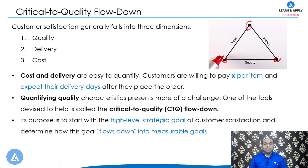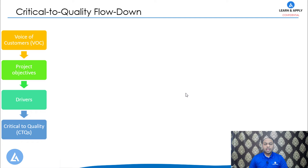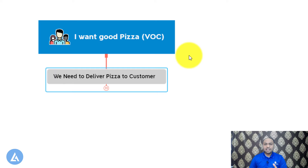Let's understand this concept with the help of a practical example. To convert the voice of customer into the critical to quality parameters, we need to follow this procedure: first, identify what is the voice of customer; then identify what is the project objectives; after that, identify what are the drivers for this project; and then these drivers need to be converted into the specific parameters, which are called as critical to quality parameters.